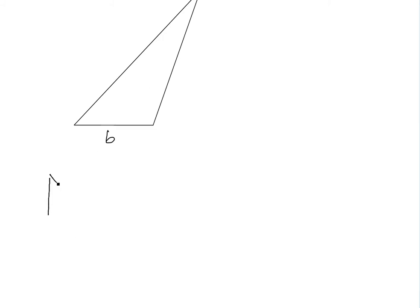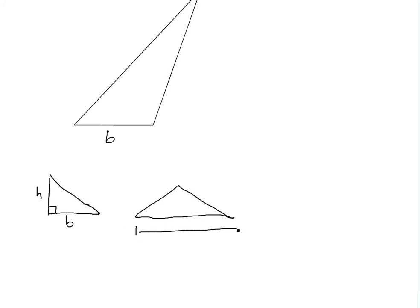Basically, I showed for a right-angle triangle, if you have something like this, and this is base and this is height. Also for a triangle like this, where the longest length is b, I showed that the area for both is just equal to base times height divided by two.